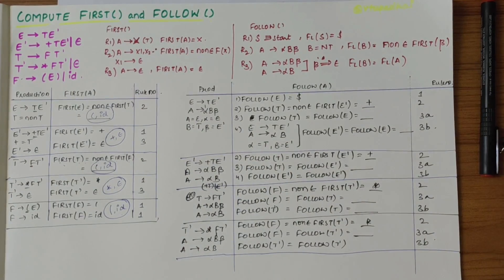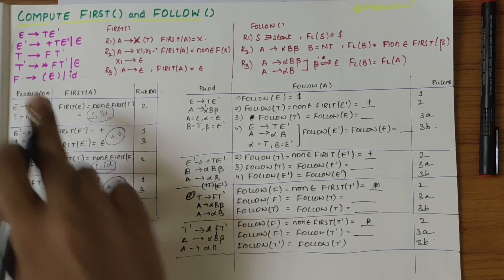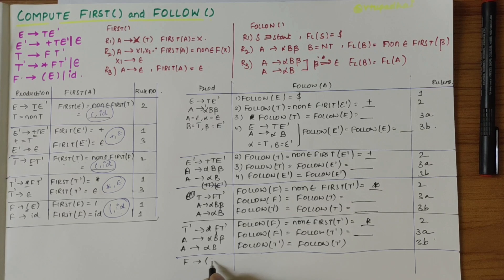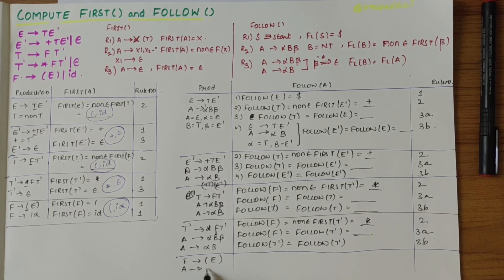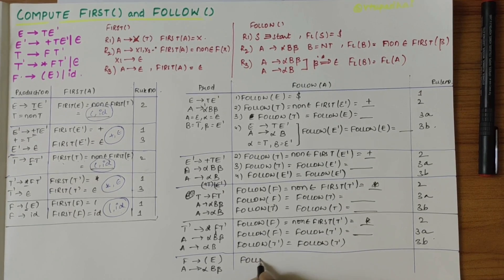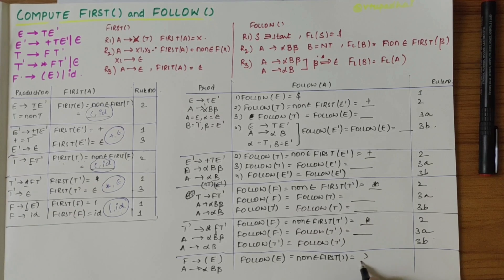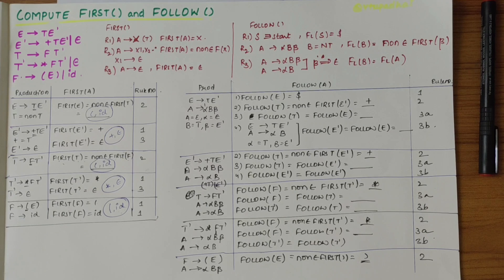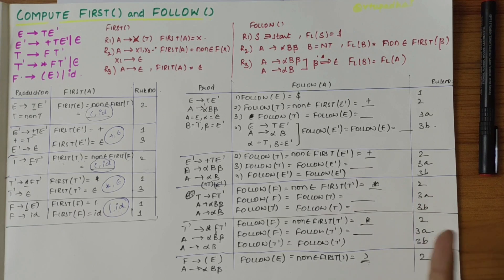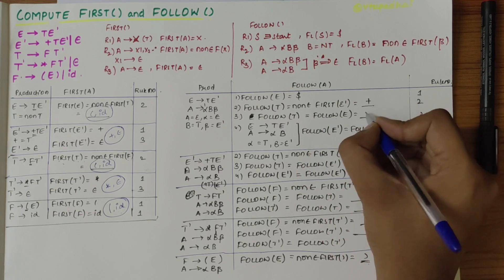T' derives epsilon — skip it. For F derives (E): comparing with A derives alpha B beta, follow of E is equal to non-epsilon first of ')', and ')' is a terminal, so follow of E includes ')'. We need not consider F derives id since id is a terminal with no non-terminal. So follow of E is ')' and also dollar, giving follow of E = ')' and '$'.